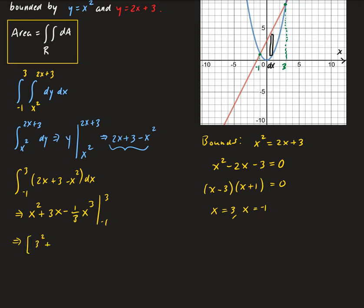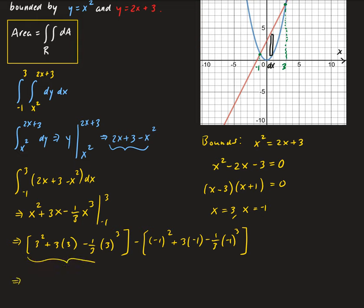Plugging in the upper bound x equals 3: 3 squared plus 3 times 3 minus one-third times 3 cubed, which simplifies to 9. For the lower bound x equals negative 1: negative 1 squared plus 3 times negative 1 minus one-third times negative 1 cubed, which simplifies to negative 5 thirds. So we get 9 plus 5 thirds, which gives us 32 over 3.